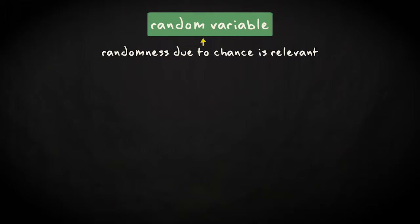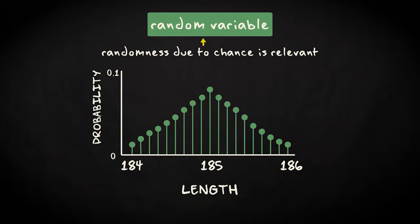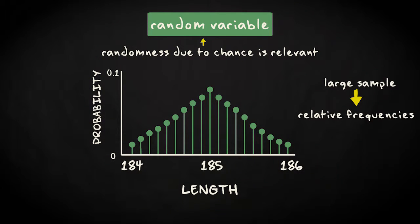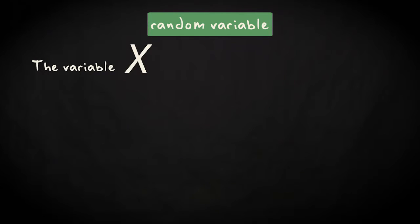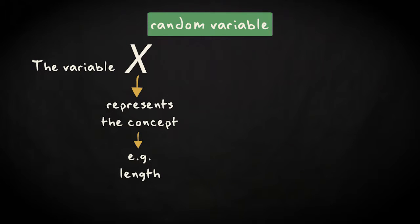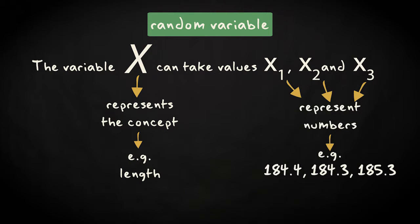A random variable can take on a set of possible values, each with an associated probability. So if you take a large enough sample for this random variable, the relative frequencies for the different values it can take will be equal to the probabilities. To keep things clear in writing, an italic capital letter is used to denote a random variable, and a small letter is used to indicate the value that it takes.